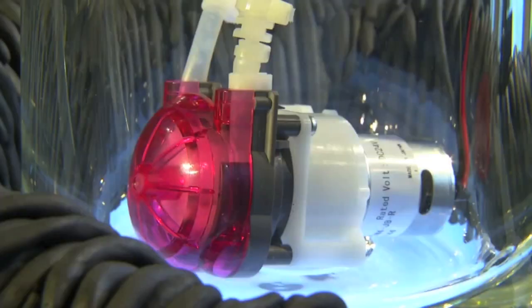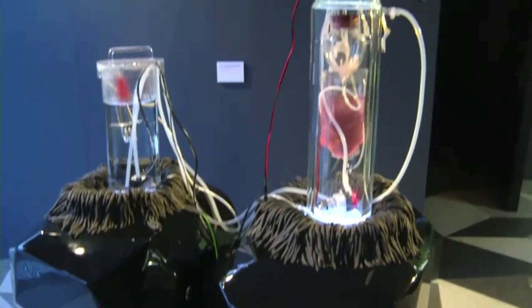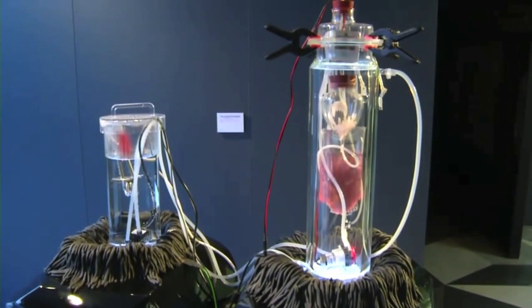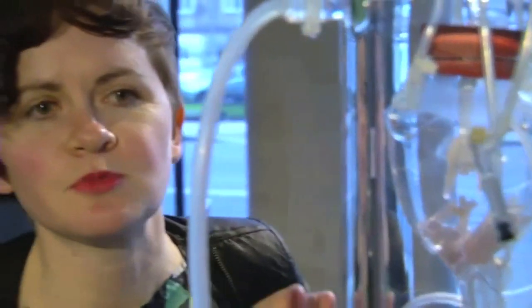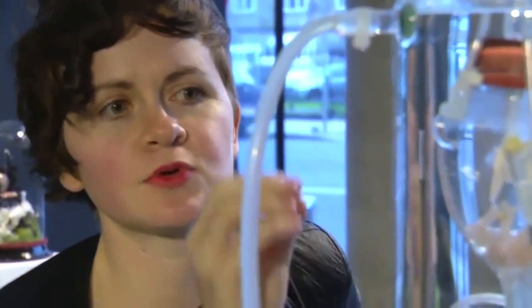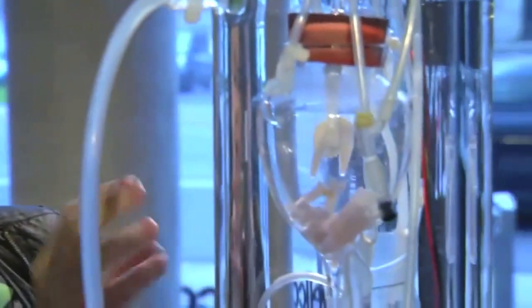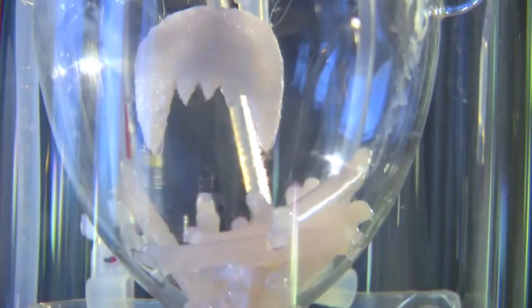So basically it's a bioreactor, it's like an artificial body. In this vessel here what you can see, the vampire fang shape, is a biodegradable polymer that's been seeded with human cells. As the exhibition continues the polymer will break down and the cells will grow to form a tissue mass. The structure you can see now will be replaced by human tissue structure.